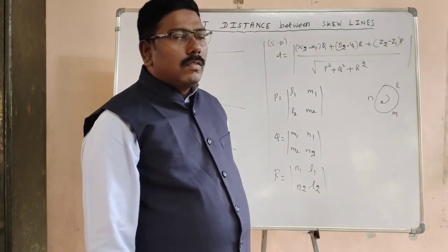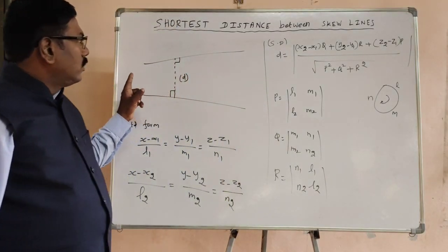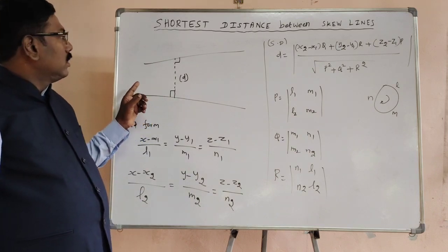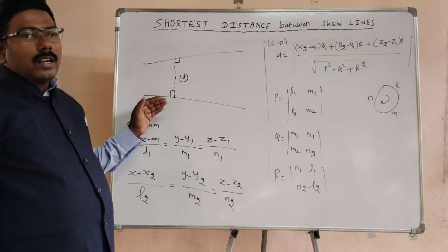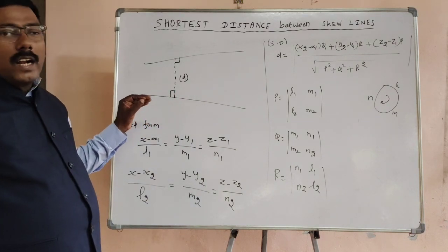Before that, we must know what is meant by skew lines. The two lines which do not intersect each other, not parallel, and not in the same plane, that is non-coplanar, are called skew lines.